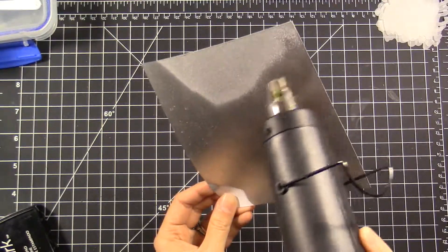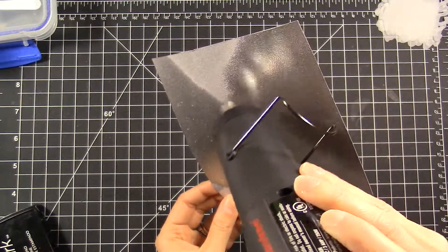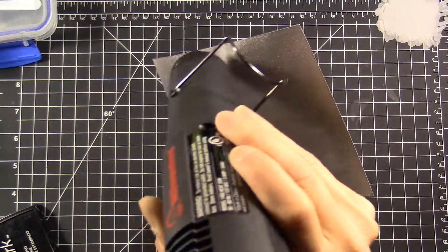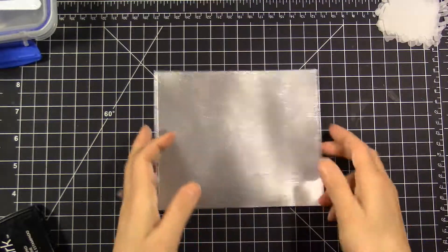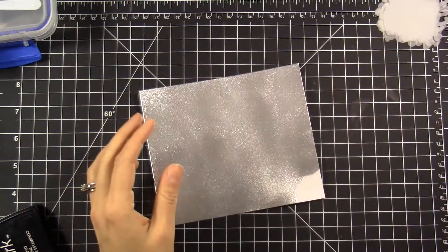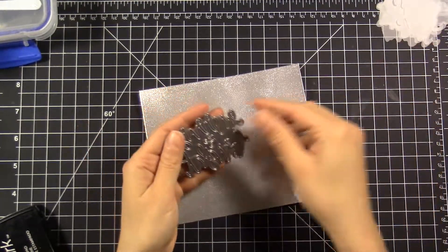I'm using the silver embossing powder. This is the most satisfying part of heat embossing anything—just seeing it melt and transform. Once I've done that and let it cool, I'm going with the Neat and Tangled Merry and Bright dies.